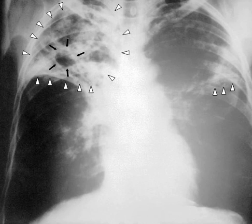Another feature of the granulomas is the development of abnormal cell death in the center of tubercles. To the naked eye, this has the texture of soft, white cheese and is termed caseous necrosis. If TB bacteria gain entry to the bloodstream from an area of damaged tissue, they can spread throughout the body and set up many foci of infection, all appearing as tiny, white tubercles in the tissues. This severe form of TB disease, most common in young children and those with HIV, is called miliary tuberculosis.